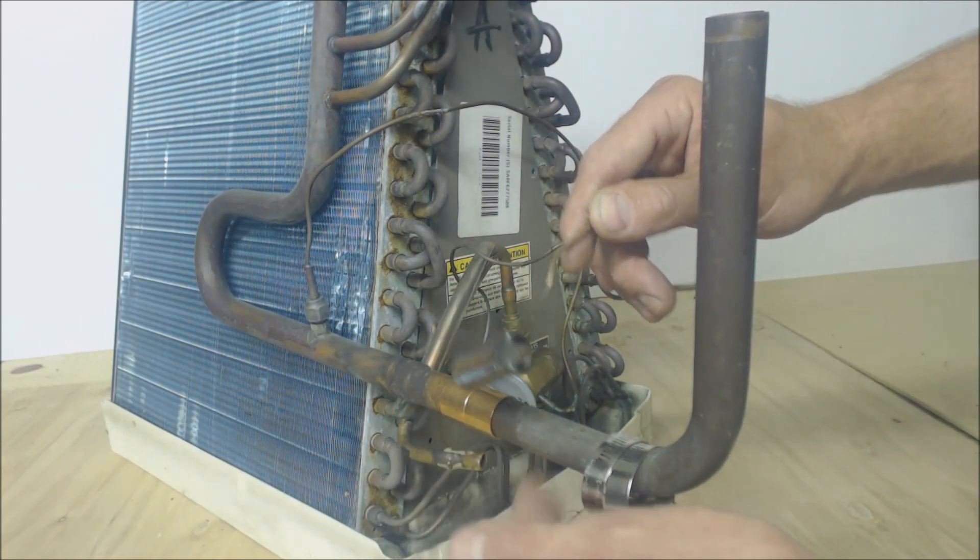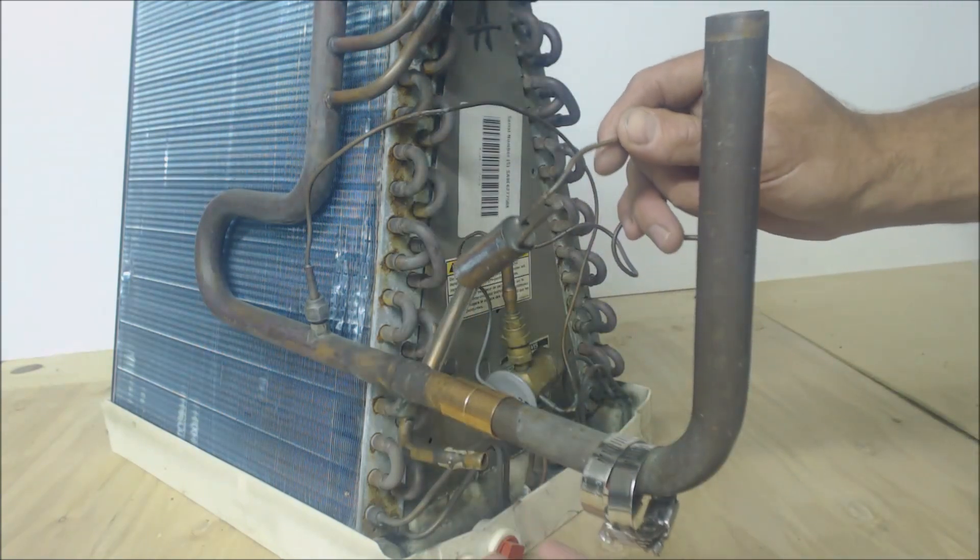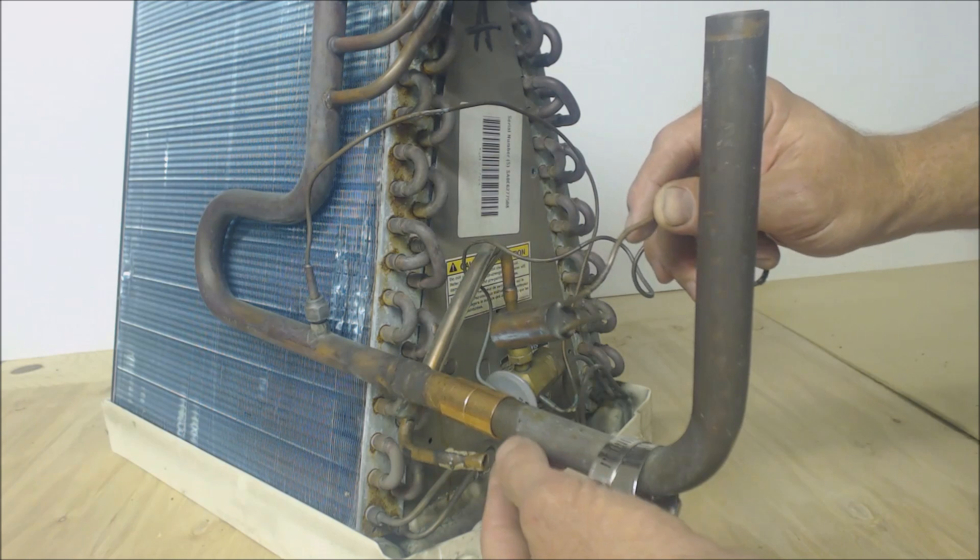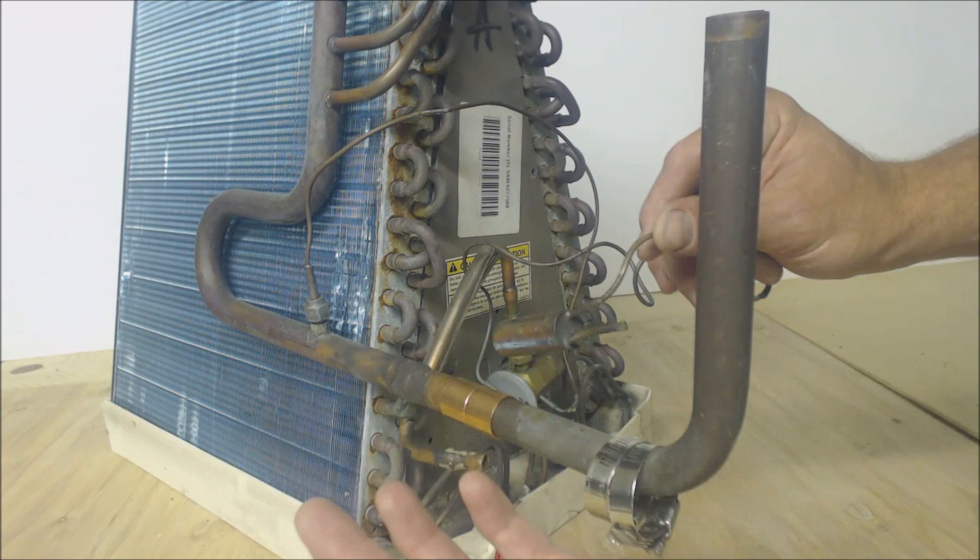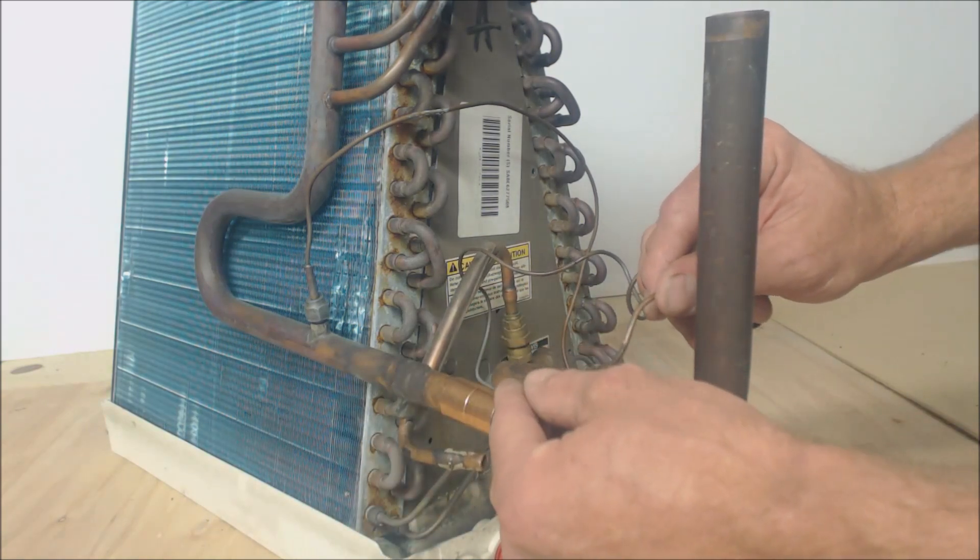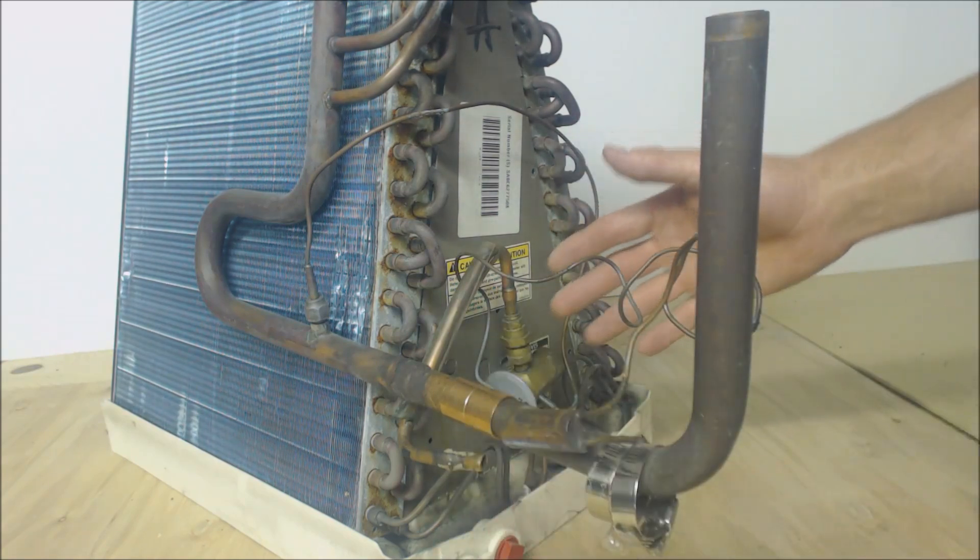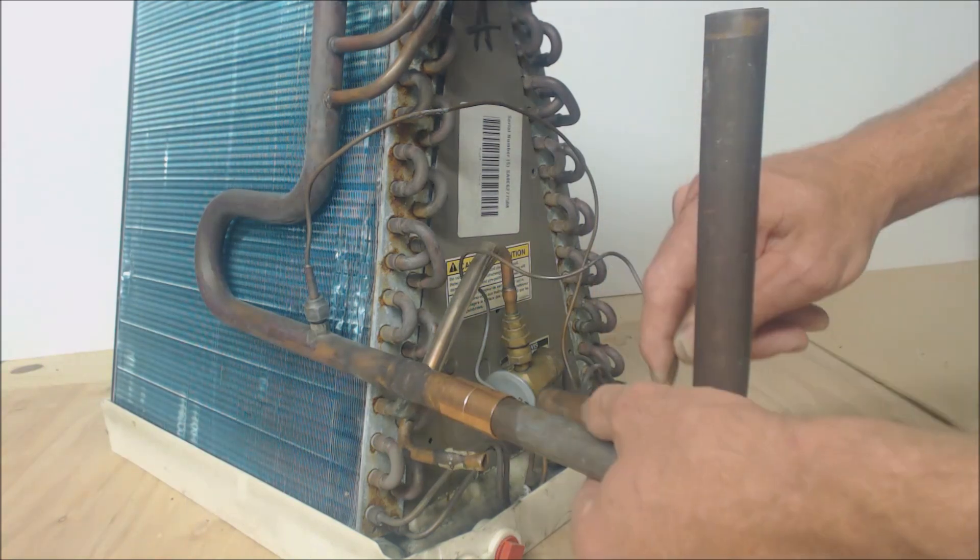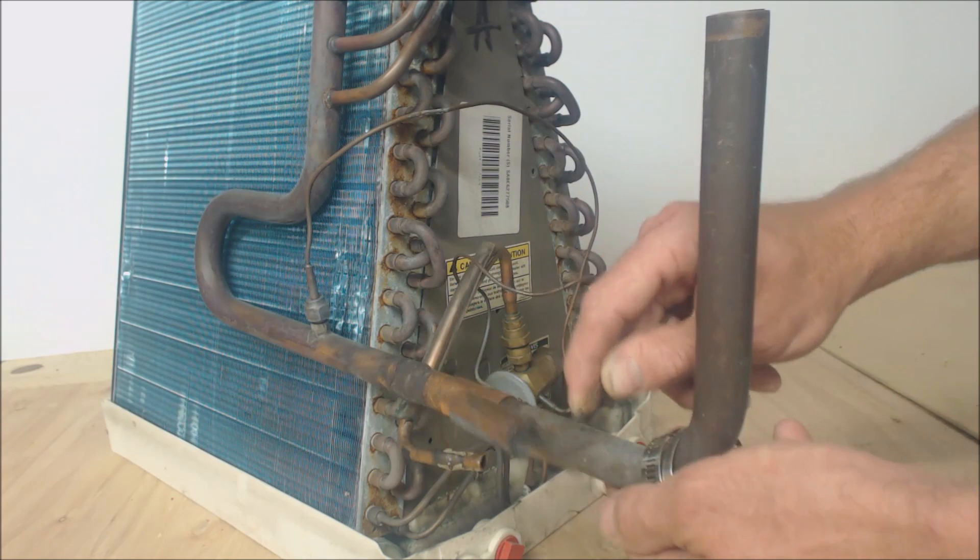We've all cut apart lines after we've recovered the refrigerant and found there's a bunch of oil on the bottom. That oil could create some insulation value and might be half a degree off. This bulb is helping the TXV sense to control the superheat across the entire evaporator coil.